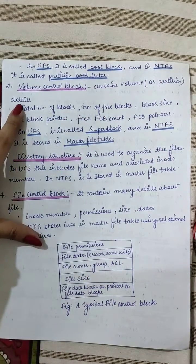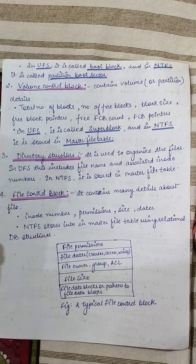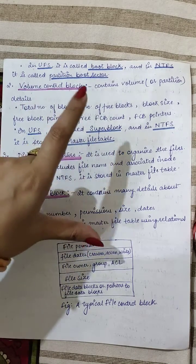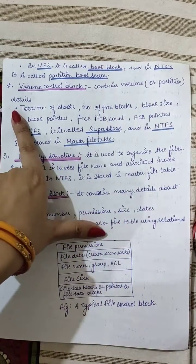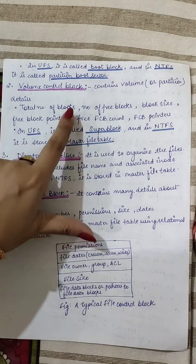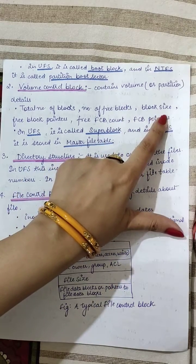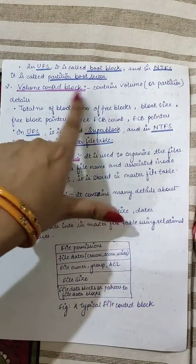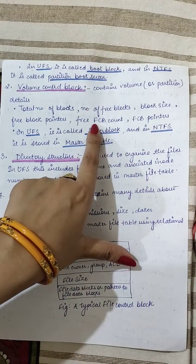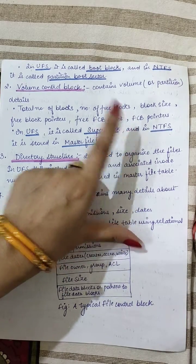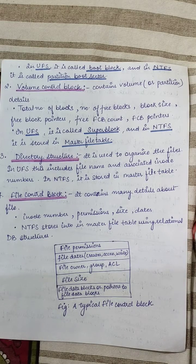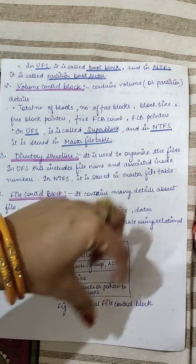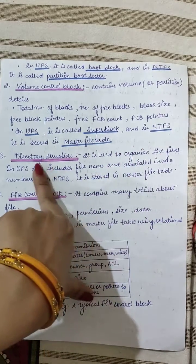In NTFS, the boot control block is called the partition boot sector. The second on-disk structure is the volume control block, which contains volume details for that partition — the total number of blocks, how many blocks are free. In the Unix file system (UFS) it is called the super block because it has information about all the other blocks and partitions, and in NTFS it is stored in the master file table.